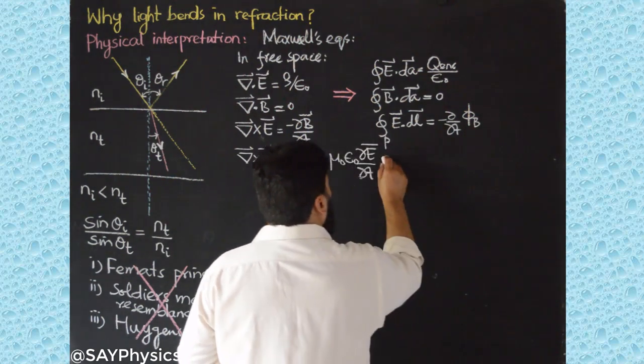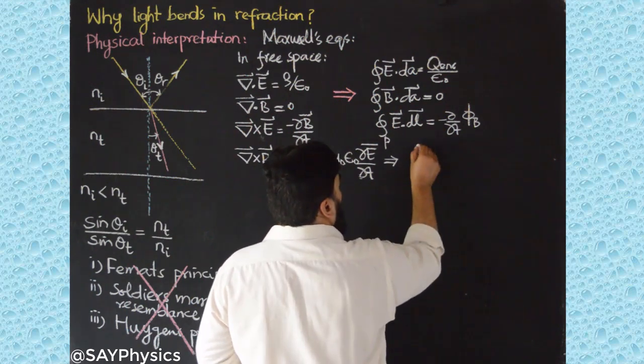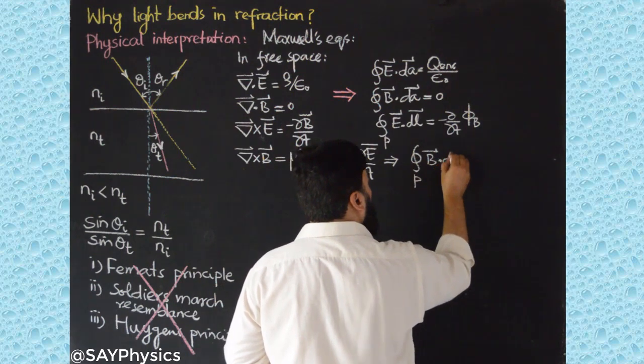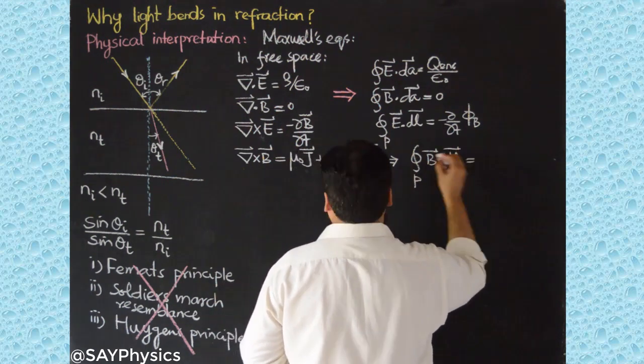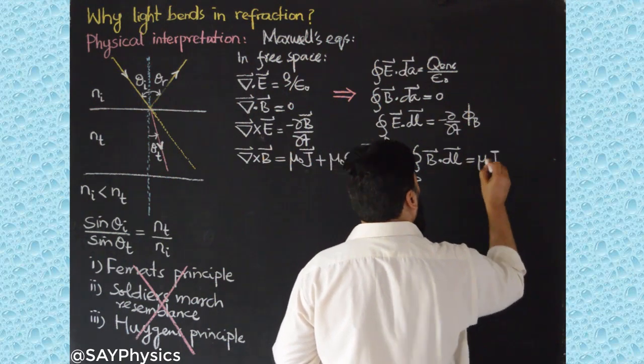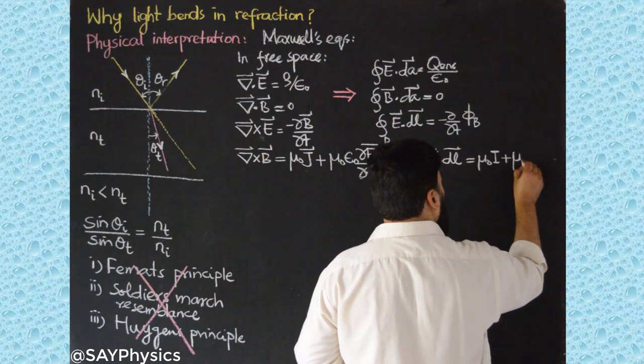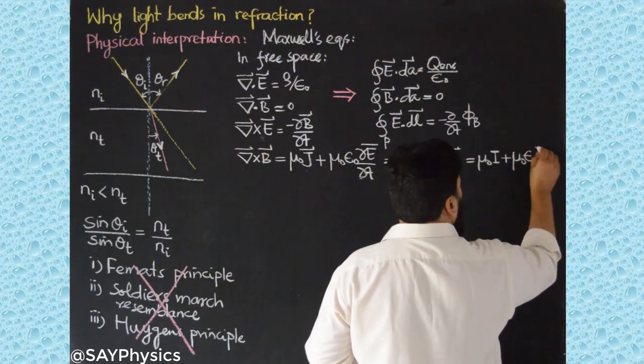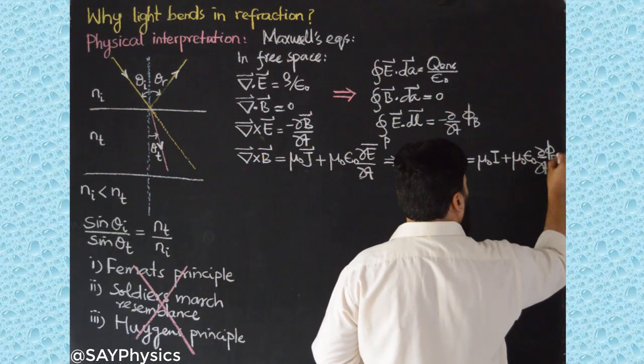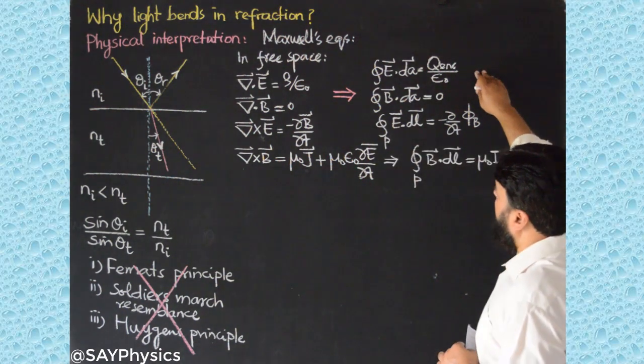And this equation will go to closed path integral B dot dL, and this is equal to mu_0 I plus mu_0 epsilon_0 and ∂/∂t and this will be the electric flux. So these are actually the integral forms of these differential forms when we write Maxwell equations in free space.